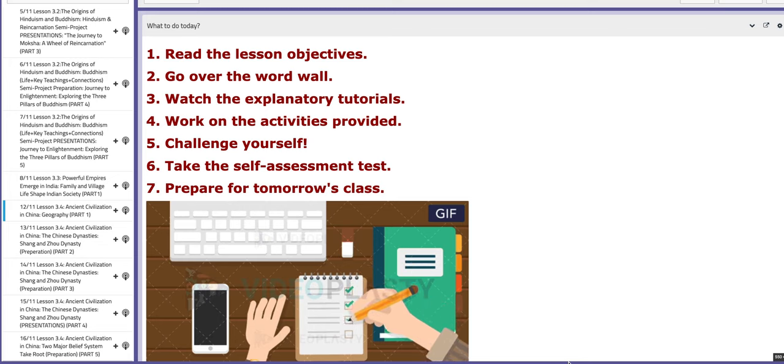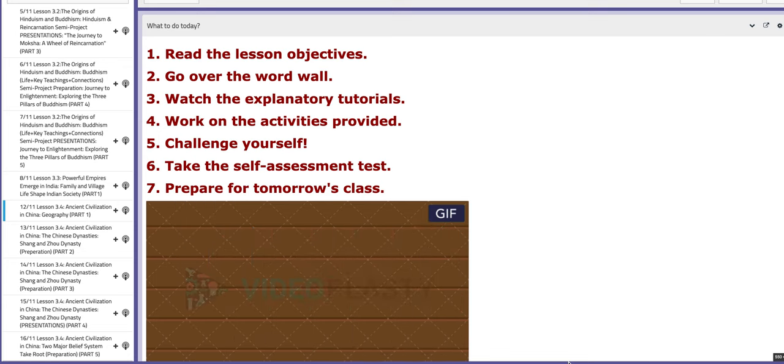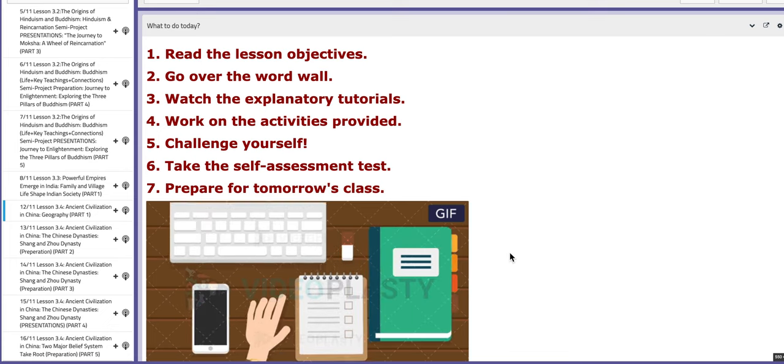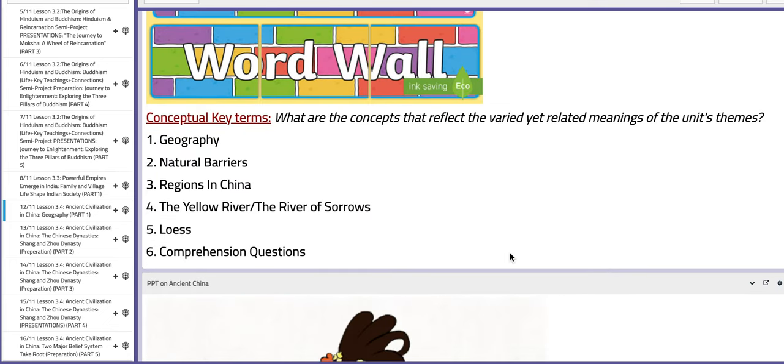Let's start with the first day of this week, the 12th of November. In this lesson, we are going to start with a new civilization, China. We are going to discuss the geography of this ancient civilization. We are going to focus on specific key terms such as geography, natural barriers, regions in China, the Yellow River, and some comprehension questions about geography.